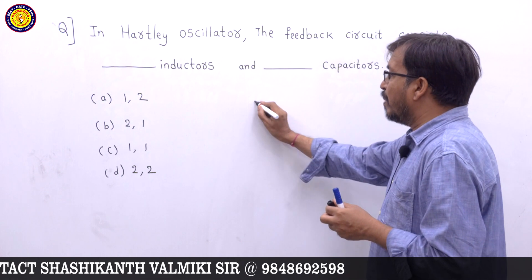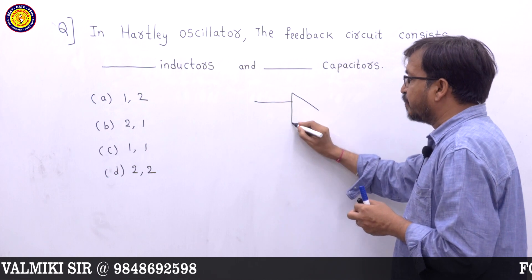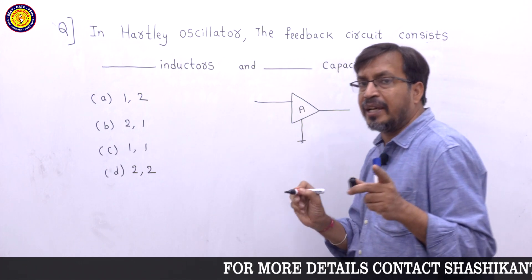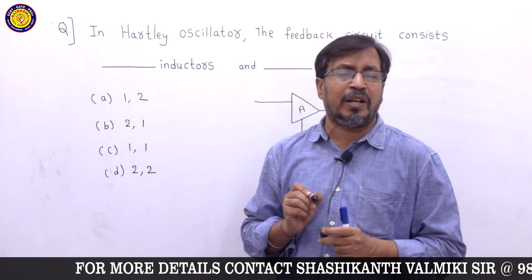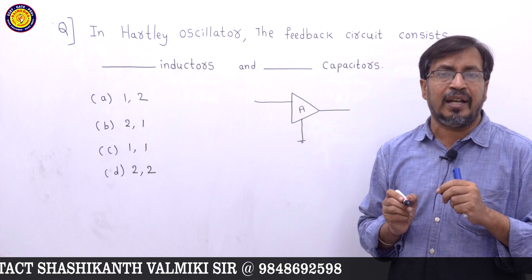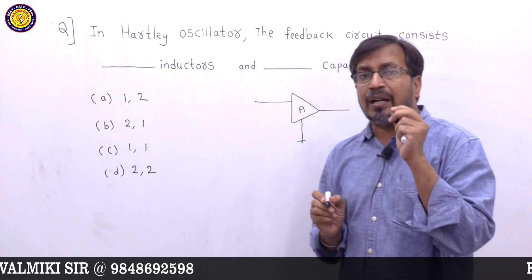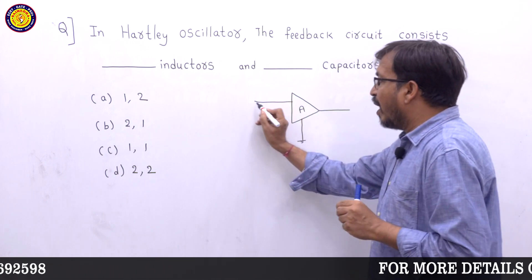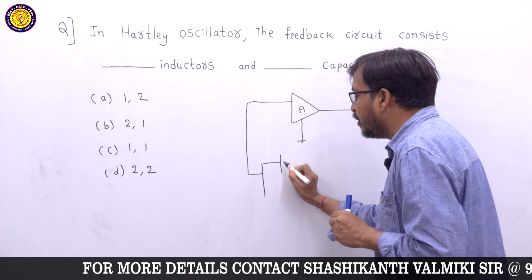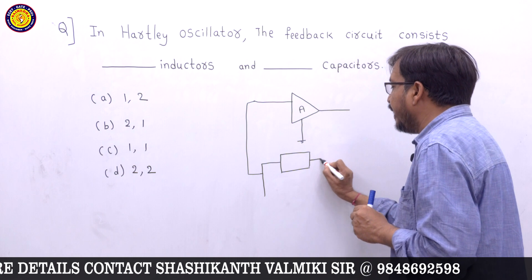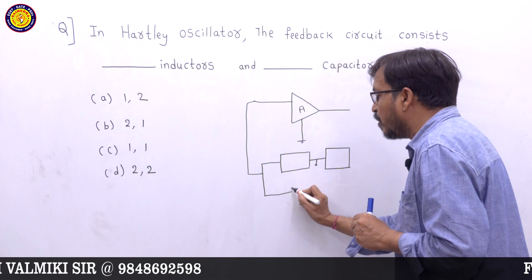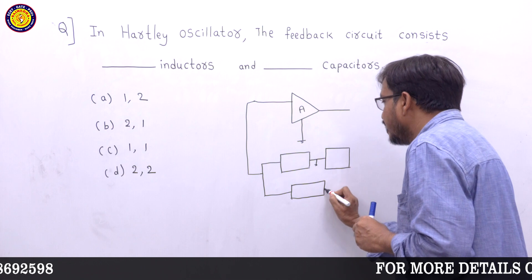We choose a block diagram. The amplifier used is a common emitter amplifier. In oscillators we use a common emitter amplifier only — to provide a 180-degree phase shift. Positive feedback is used. The feedback circuit has three elements: Z1, Z2, and Z3.